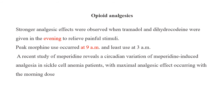For opioid analgesics, stronger analgesic effects were observed when tramadol and dihydrocodeine were given in the evening to relieve pain. Peak morphine use occurred at 9 AM and least use at 3 AM. A recent study on meperidine reveals a circadian variation of meperidine-induced analgesia in sickle cell anemia patients — maximum analgesic effect occurs with the morphine dose. It is always advisable to give opioid drugs in the evening for the best effect.